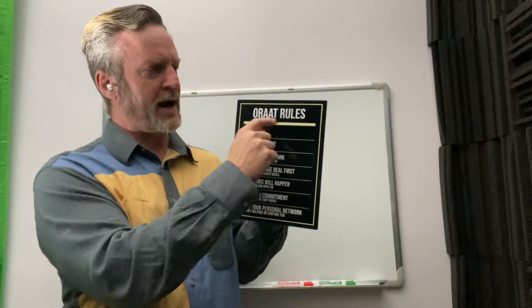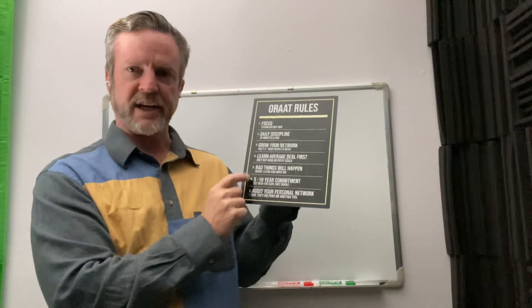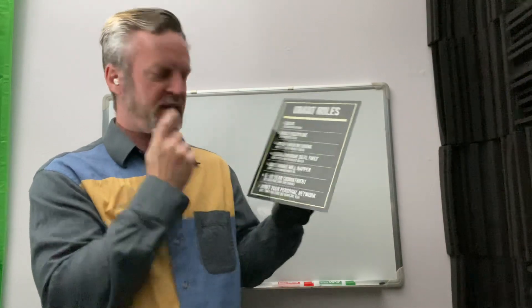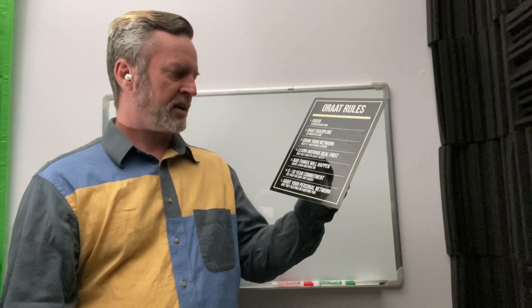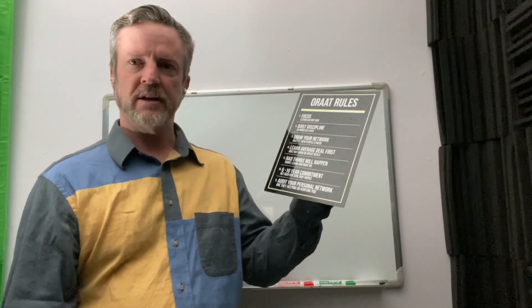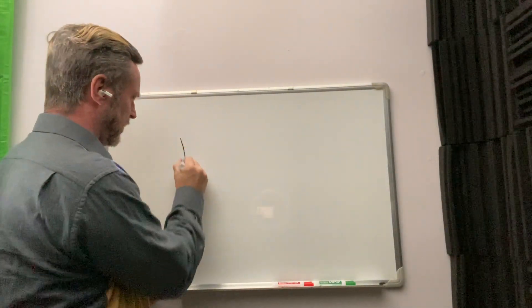But really what I want to do is key on that word journey, because I now develop these ORAT One Rental at a Time rules and I want to focus on number six. Number six says five to ten year commitment, get rich for sure, and then in parentheses not quick.